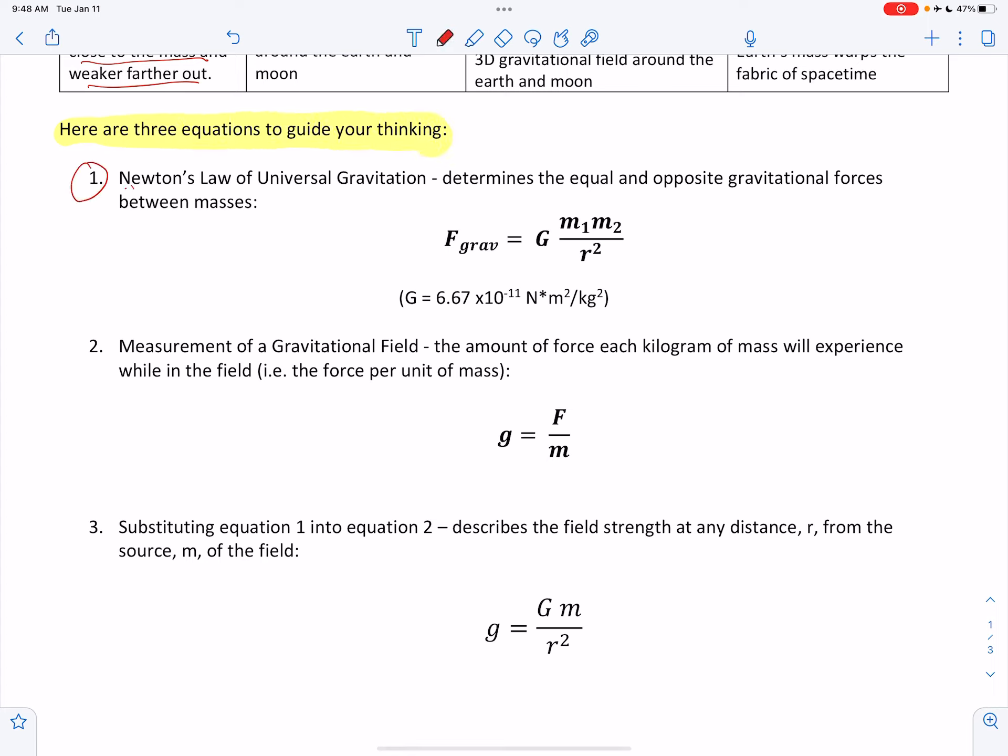Number one is Newton's law of universal gravitation. It determines the equal and opposite gravitational forces between masses. We would consider two masses, mass one and mass two. We have learned before about this constant, the universal gravitational constant, which is a very small number, because it suggests that the force of gravity between ordinary masses is actually extremely weak.